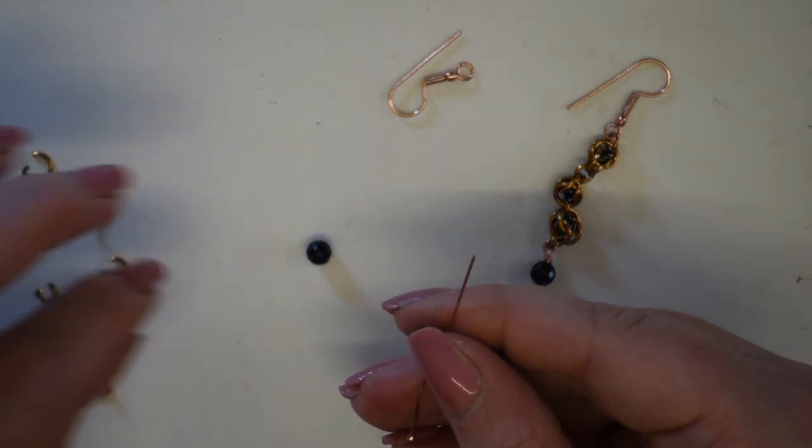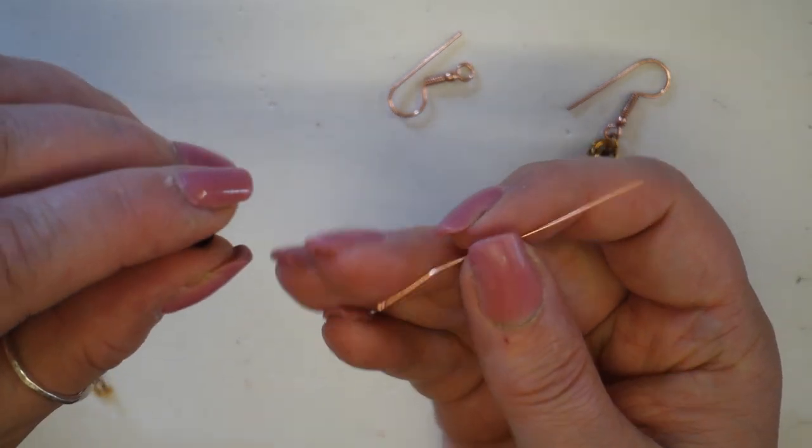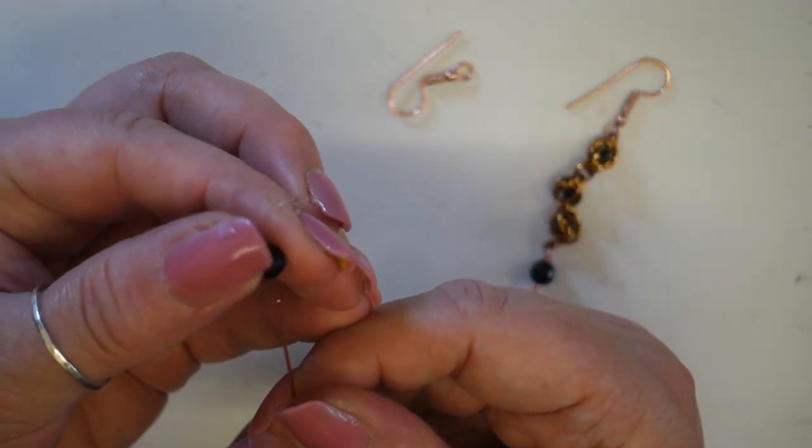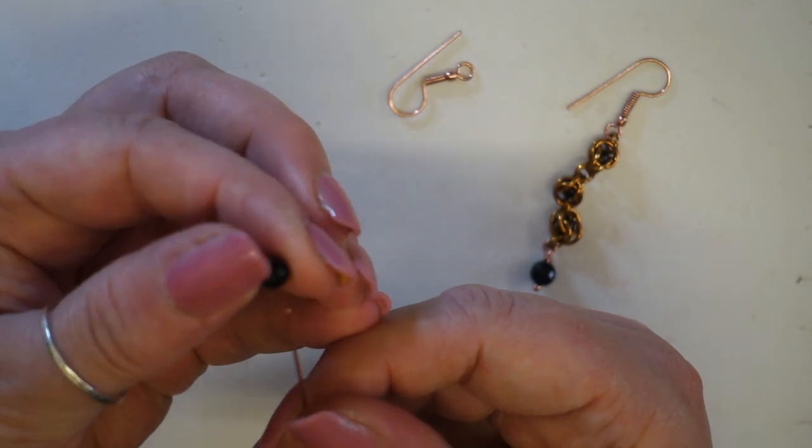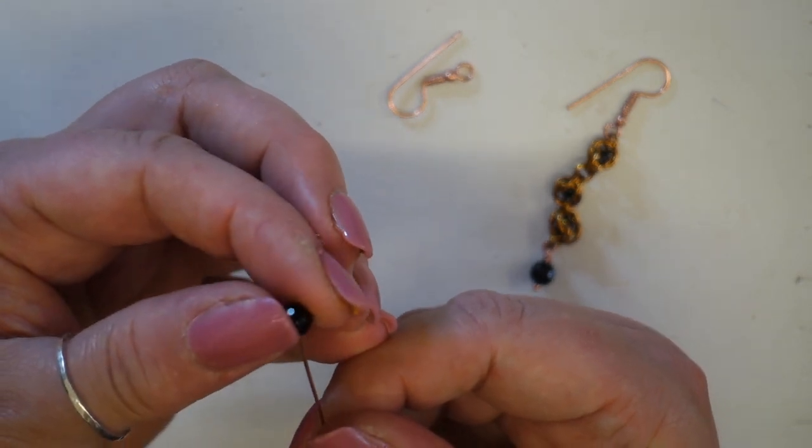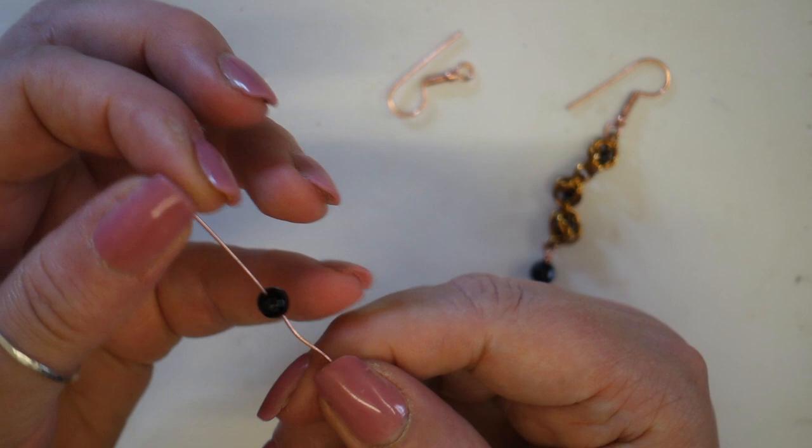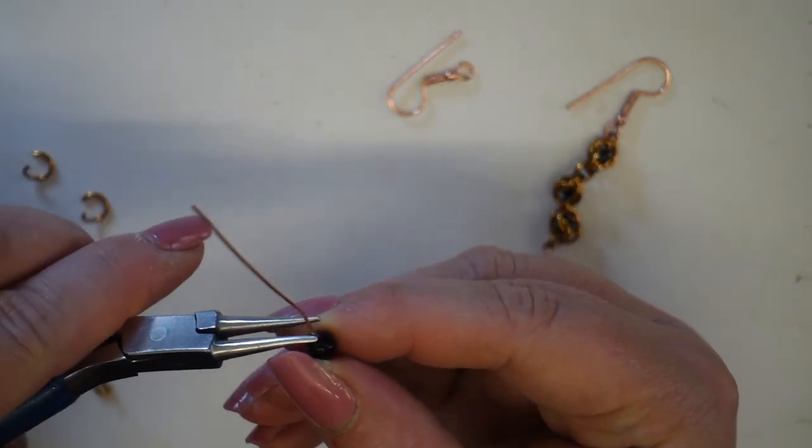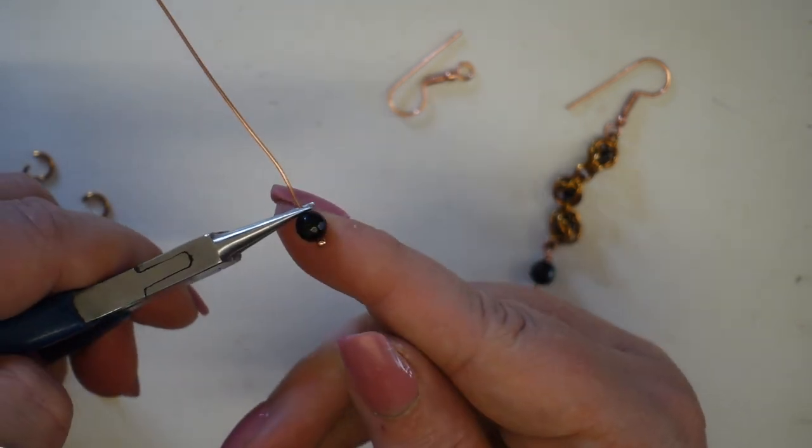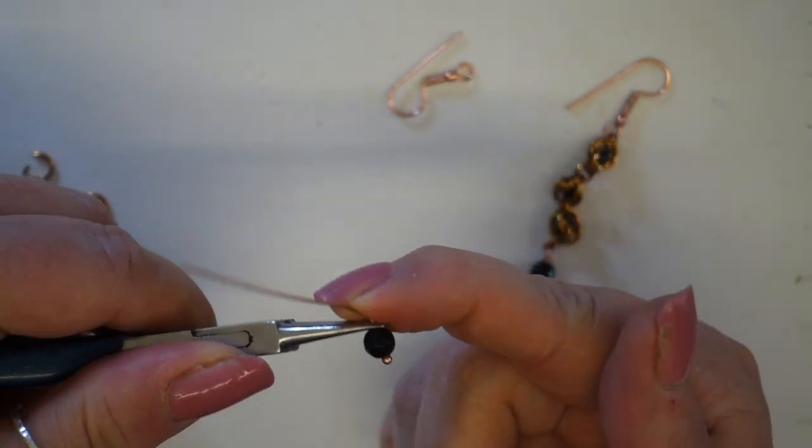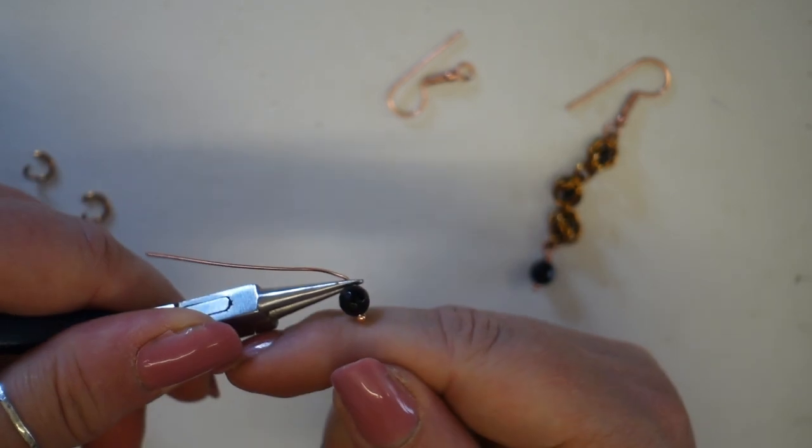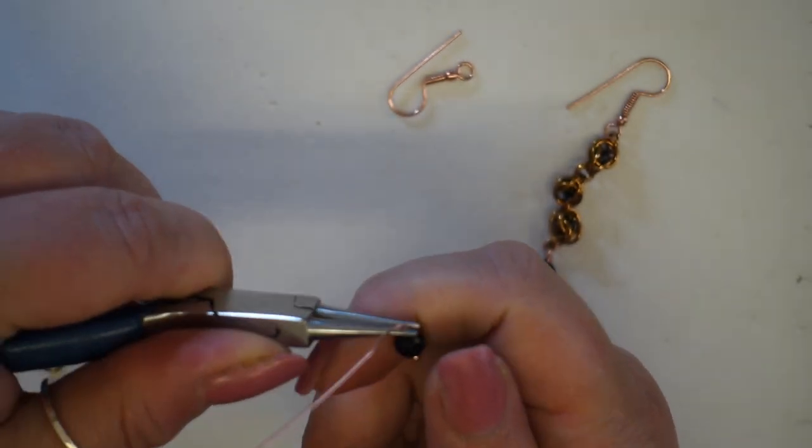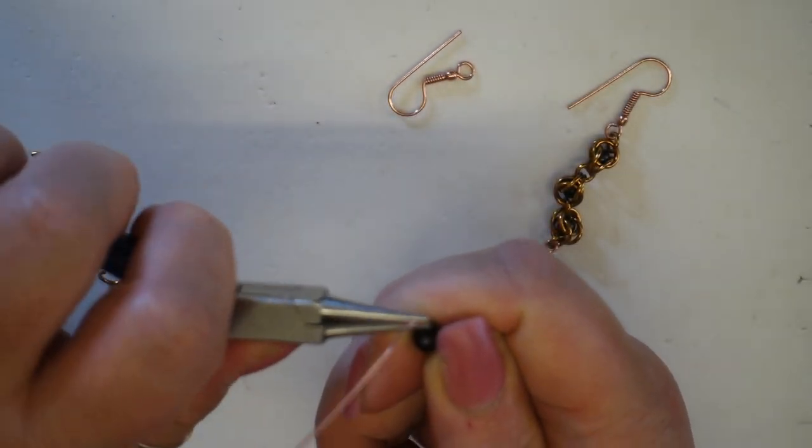Taking a six mil faceted black agate, I'll pop this straight onto my head pin. Take my chain nose pliers and place them nice and close to the gemstone. I'm then going to push that head pin towards me.